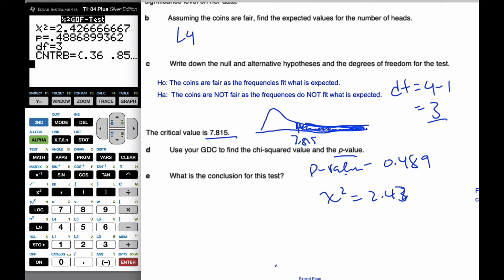Alright, so now, because my chi-squared is over here, it's not in this rejection region. From that region, or the other reason that I can say that the p-value is large, my conclusion is going to be,